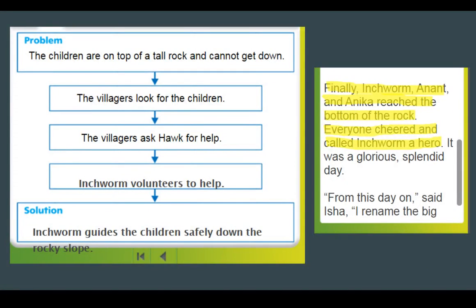Now we can revisit our initial problem: the children are on top of a tall rock and cannot get down. And our solution: Inchworm guides the children safely down the rocky slope. I hope this helps you with problem and solution. Remember, there are lots of different ways that we can think about problems and solutions. Good luck on your assignment — you're going to do great!